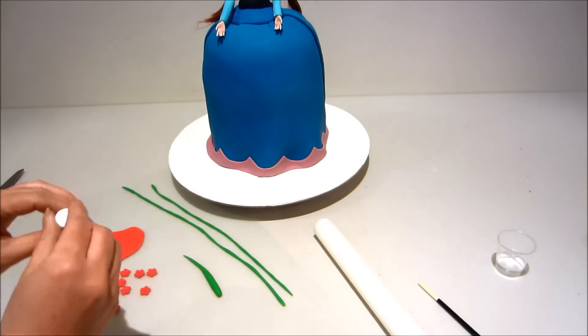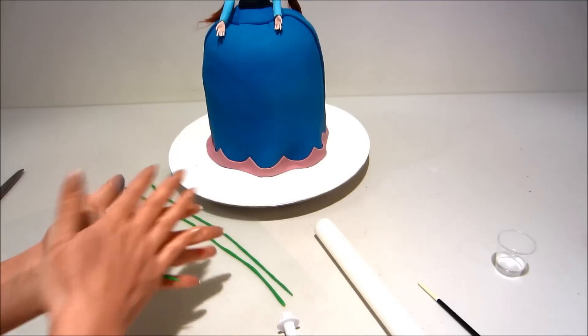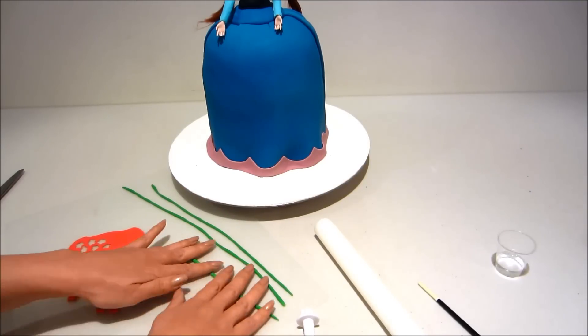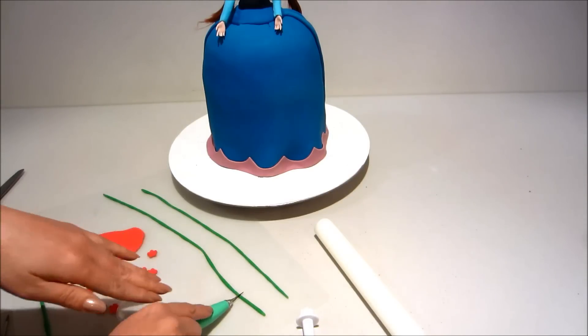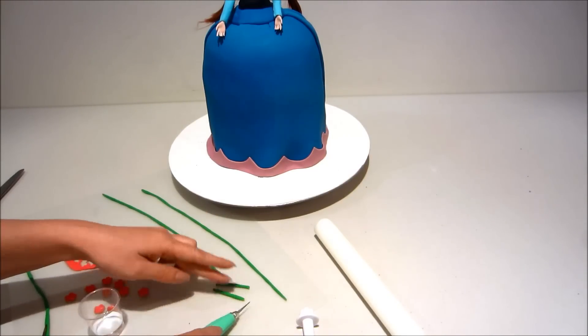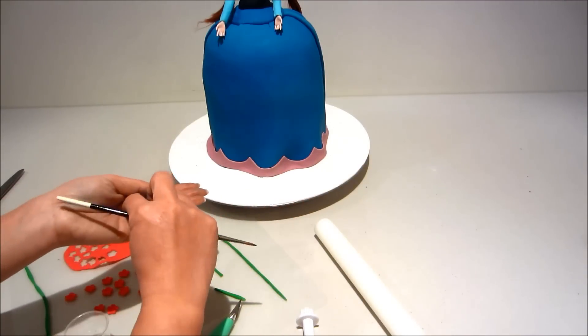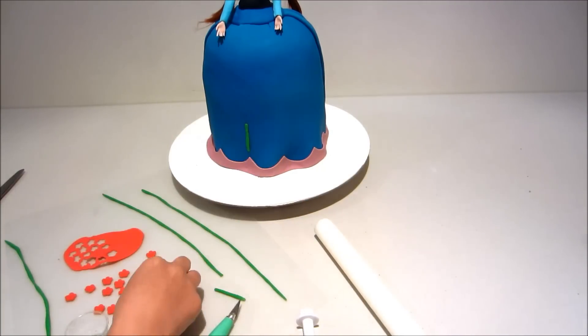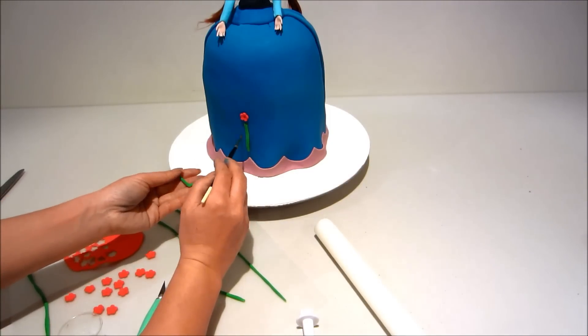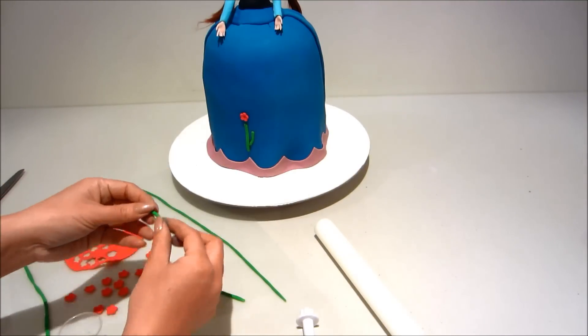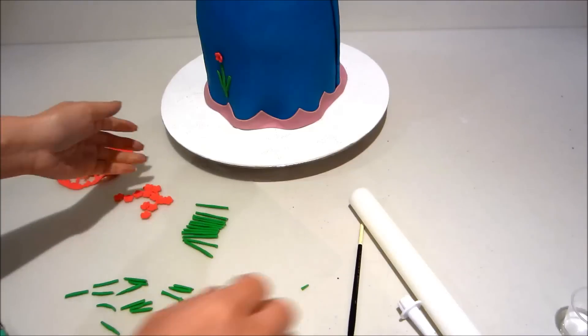Okay now onto decorating her dress. I'm using a small blossom cutter just to cut out some red flowers. I'm rolling out some green fondant, using my knife to cut it into little strips. Now attaching the stems and the flowers and the little leaves. Okay I'm cutting all my portions down and then I'm going to attach it all around her dress.